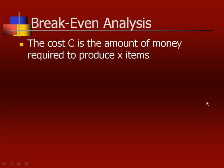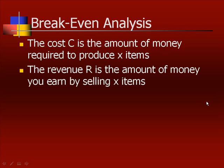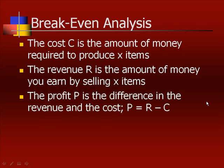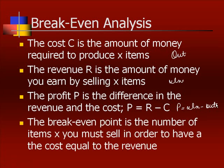Example 3 deals with breakeven analysis, which we use in marketing and businesses. The cost, C, is the amount of money required to produce x items. The revenue, R, is the amount of money you earn by selling x items. And the profit, P, is the difference in the revenue and the cost. The revenue is the amount of money that you bring in. The cost is the amount of money that you pay out. And profit is how much you bring in minus how much you pay out. Now, the breakeven point is the number of items that you must sell in order to have the cost equal to the revenue. So when they are asking you for breakeven, then you're going to set your cost equal to the revenue.